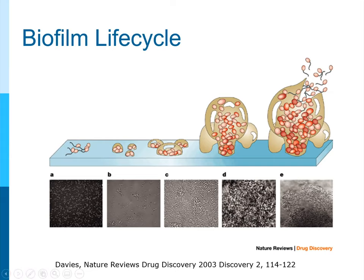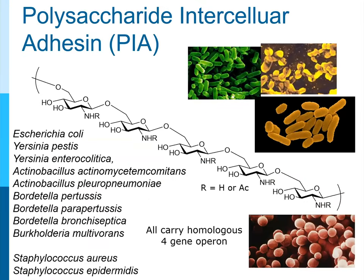We became interested in this extracellular matrix because it's really the key glue holding everything together. What attracted us to the problem was that surprisingly, many different species of bacteria produce the same polymer key to forming these biofilms. This list — including both gram negative and gram positive species with lots of bad actors — all produce this poly-N-acetylglucosamine homopolymer that is partially deacetylated, with the deacetylation level varying depending on where you isolate it from.